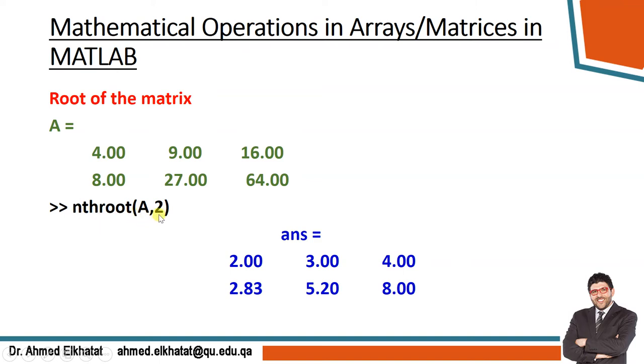The syntax is nthroot(A, 2), where 2 means square root. If you make it 3, this means cube root. So nthroot, then put the matrix name and the order of the root. Let's try making it 3 - it will give me the square root of each item.